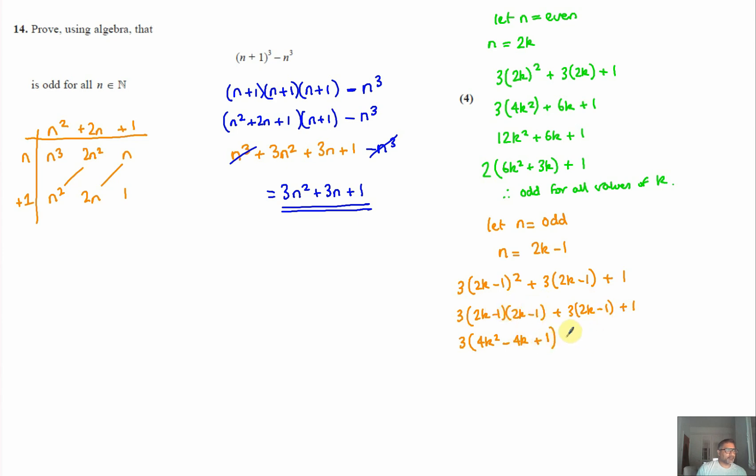Then expanding again, 12k² - 12k + 3 + 6k, and then -3 add 1 gives us -2. Simplifying again, that gives us 12k² minus 12k plus 6k is -6k. And I've got +3 take away 2, so that gives me +1.